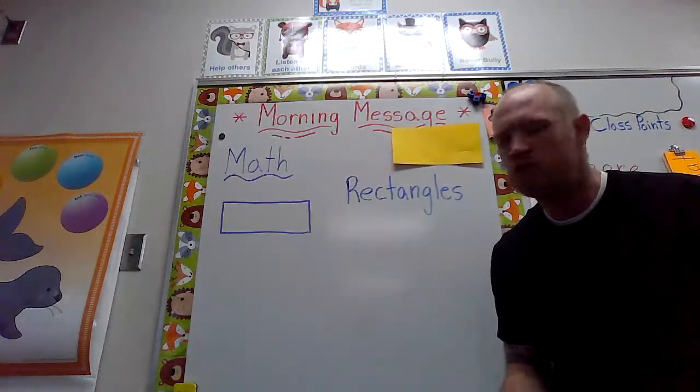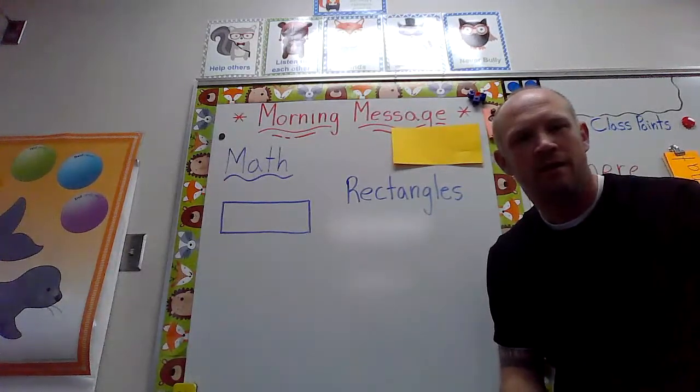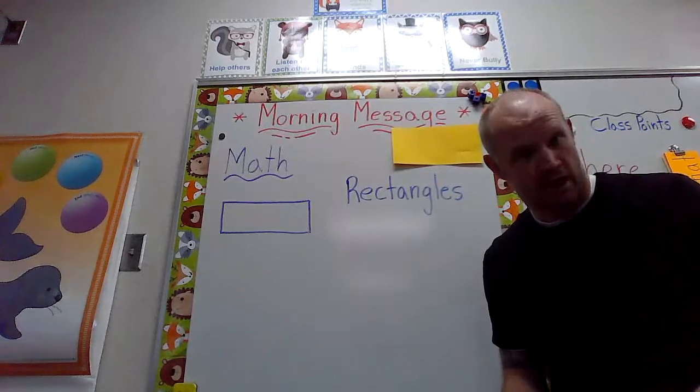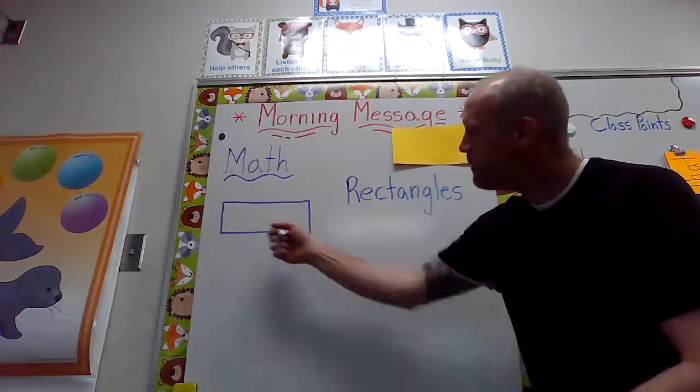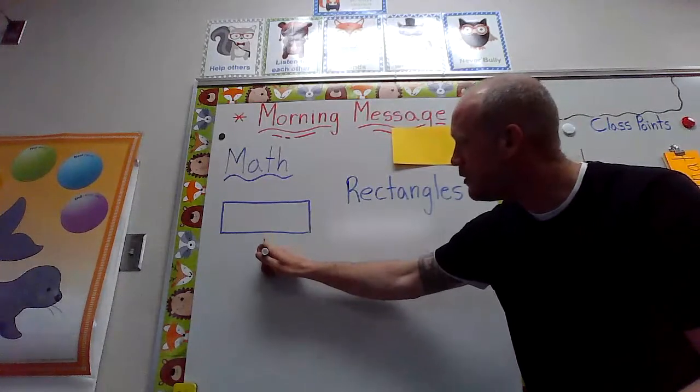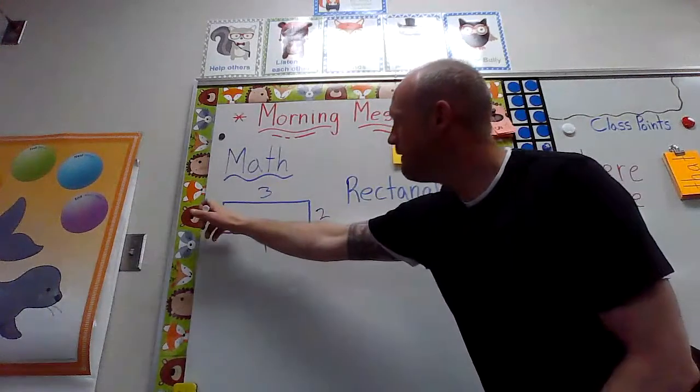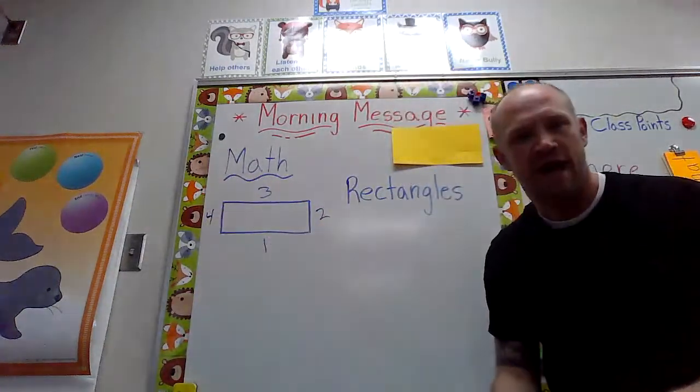Well, you could talk about the number of sides. How many sides does our shape have? Well, let's count them: one, two, three, four. It has four sides. Nice job!